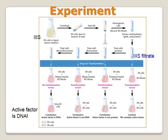But when they subjected the filtrate to deoxyribonuclease to digest the DNA content of that homogenate and then mixed it with the rough bacteria, the ability to transform the rough bacteria had disappeared. Their final conclusion was that DNA is the active factor able to transform the rough bacteria into smooth bacteria and cause it to be virulent. The active transforming principle is DNA.